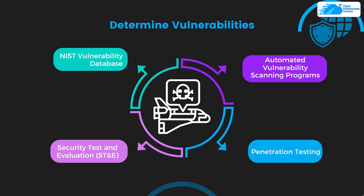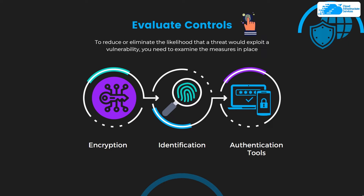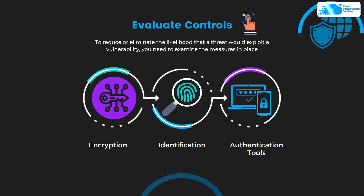At step number four you need to evaluate controls. To reduce or eliminate the likelihood that a threat or vulnerability will exploit or damage your business, you need to examine the measures in place. This includes techniques such as encryption, identification, and the use of authentication tools. These controls can also be divided into preventive and detective categories.